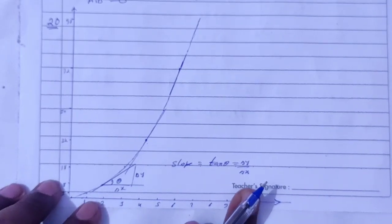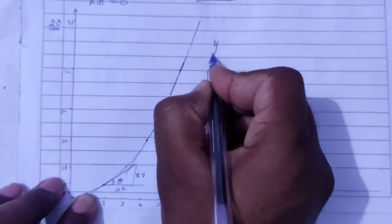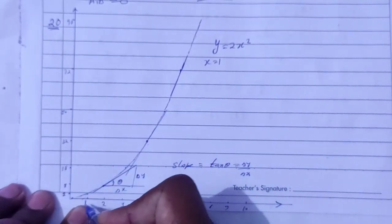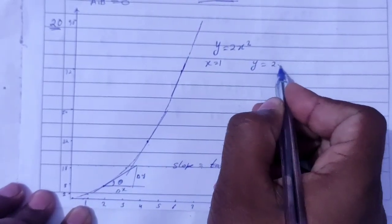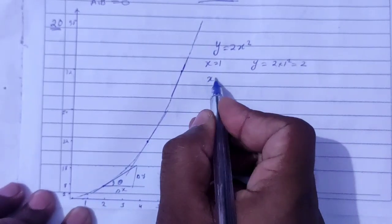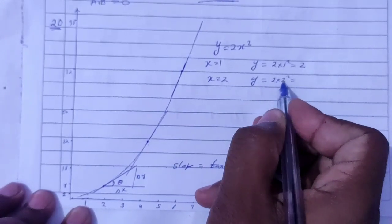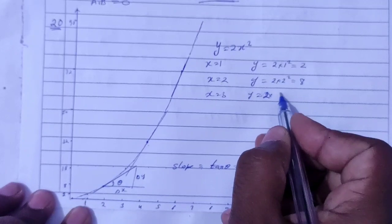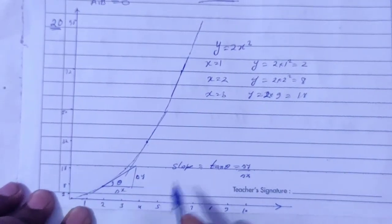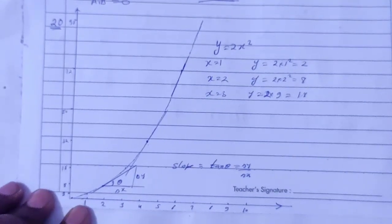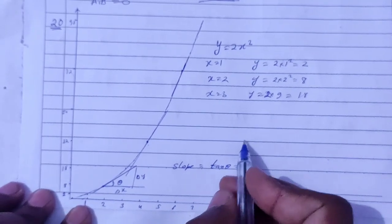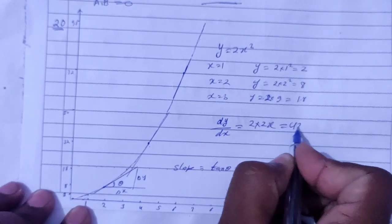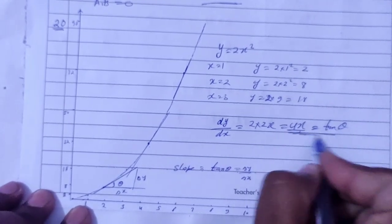All four tangents' slopes can be found this way, but only if the graph is available. Next part: verify that the curve drawn is y equal to 2x squared. To verify, put x equal to 1 — y should equal 2 into 1 squared equals 2. Put x equal to 2 — y equals 2 into 2 squared equals 8. Put x equal to 3 — y equals 2 into 3 squared equals 18. These values are correct. Next, differentiate: dy by dx equals 2 into 2x, so slope equals 4x.